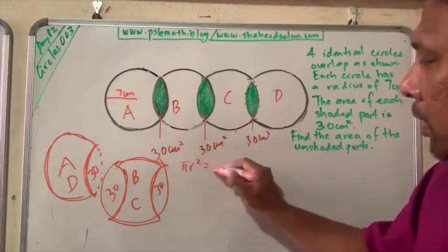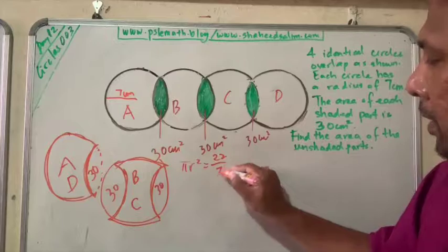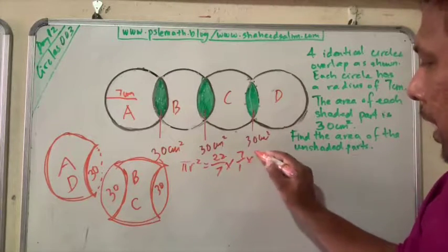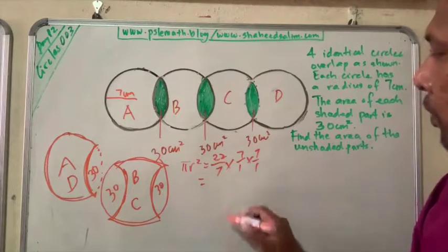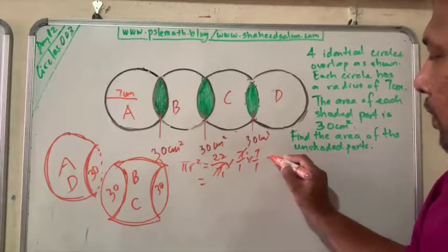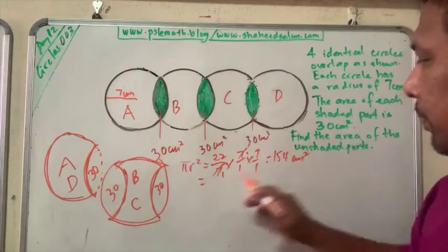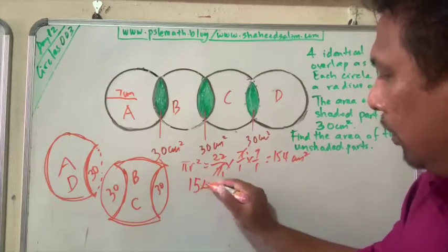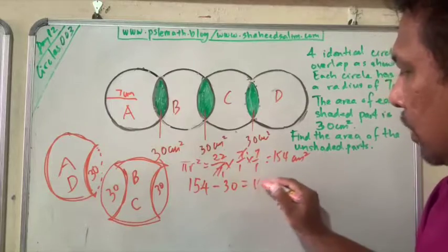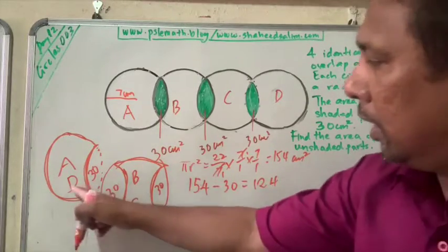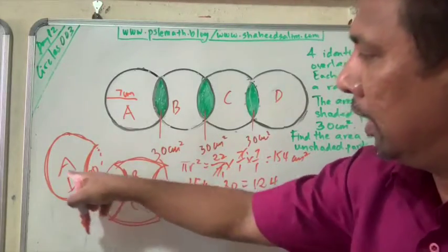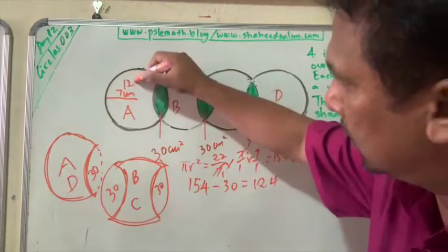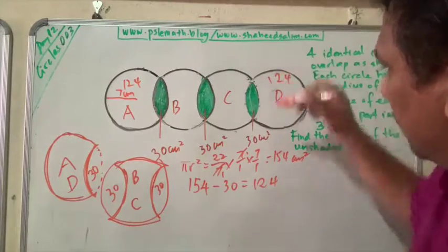Formula is π r squared. π is 22 over 7, times r is 7 cm, times 7 cm. We've done this calculation before. You have 7 divided by 7, you get 154 square cm. So 154 minus 30 equals 124. You see, 154 minus 30, you get the area of A and D. So this is 124 square cm, this is 124 square cm.